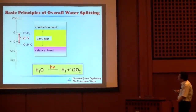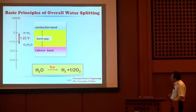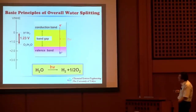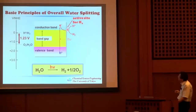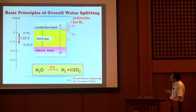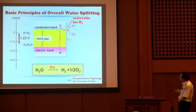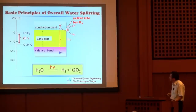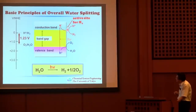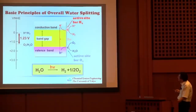Let me introduce the basic principles of overall water-splitting. Here I show the proton/hydrogen and water/oxygen redox potentials versus the normal hydrogen electrode, and the bandgap positions of semiconducting photocatalysts. Under photo-irradiation, electrons in the valence band are excited to the conduction band. If the conduction band bottom is more negative than the proton/hydrogen redox potential, photo-excited electrons can reduce protons to hydrogen. We typically introduce co-catalysts to facilitate this. Similarly, if the valence band top is more positive than the water-oxidation potential, photo-excited holes can oxidize water to O₂. Today I will also discuss the effect of co-loading oxygen evolution co-catalysts alongside hydrogen evolution co-catalysts.